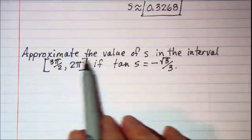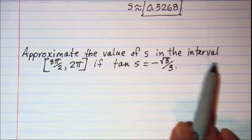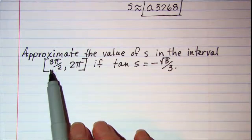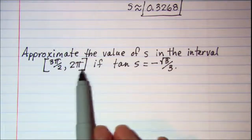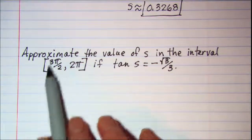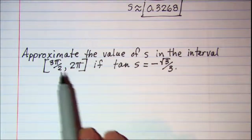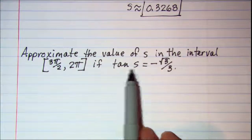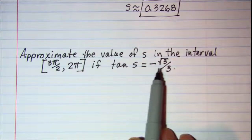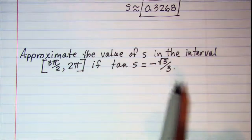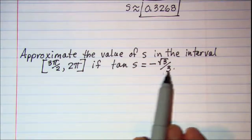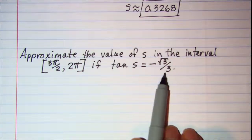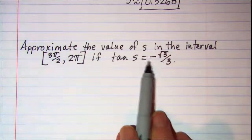Let's do another one: approximate the value of s in the interval from 3 pi over 2 to 2 pi, so quadrant 4, if the tangent of s is negative root 3 over 3. On this one we have exact values instead of decimals, so we can do this without a calculator.